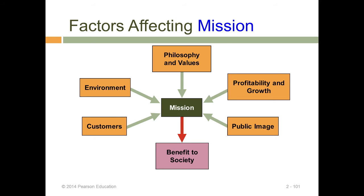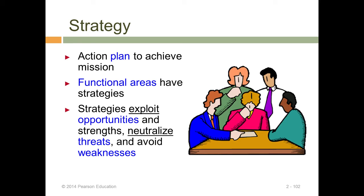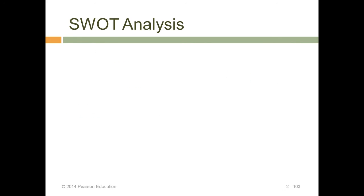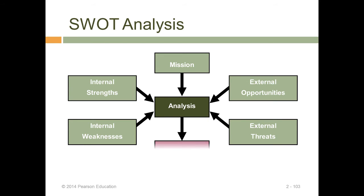The strategy is an action plan to achieve the vision, and each functional area may have its own strategy that translates the organizational strategy into functional strategies. Strategies exploit opportunities and strengths to neutralize threats and avoid weaknesses. This is the SWOT analysis, which looks at internal strengths and weaknesses.